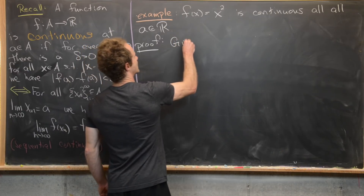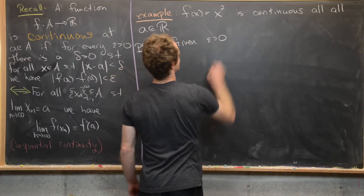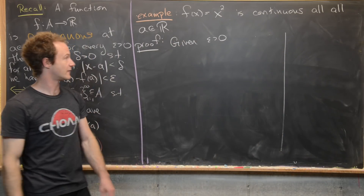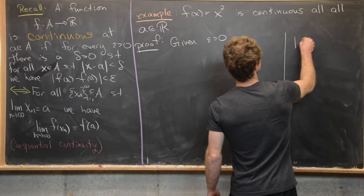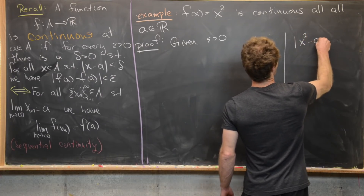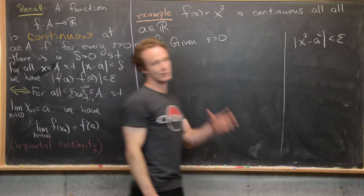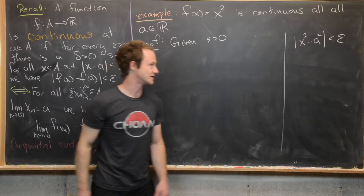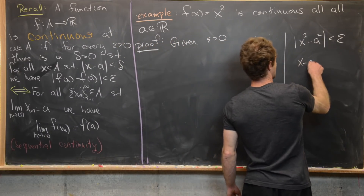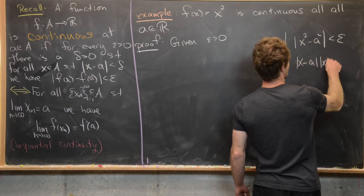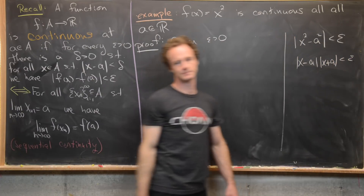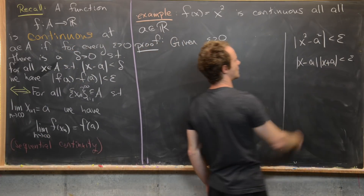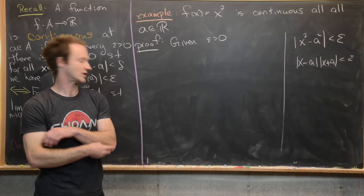Given ε > 0, let's do some scratch work. We want |x² − a²| < ε, and we need to construct a δ that makes that happen. We can factor the left-hand side: |x² − a²| = |x − a| · |x + a| < ε.